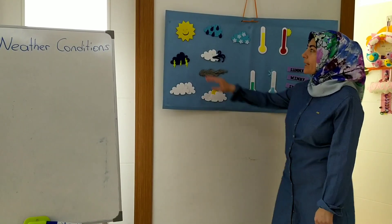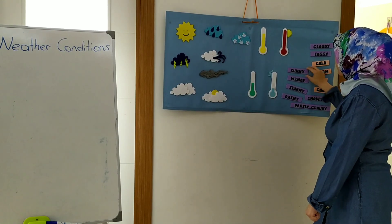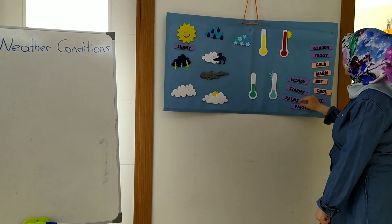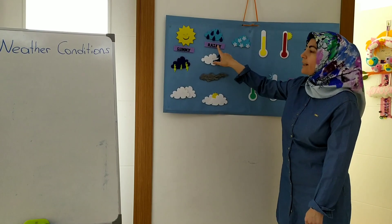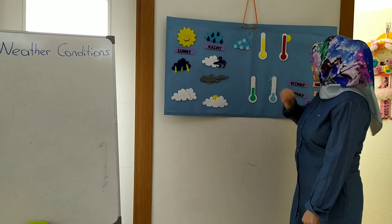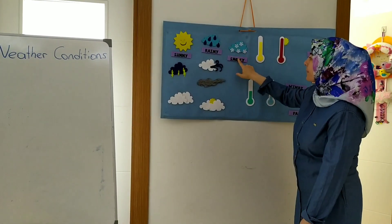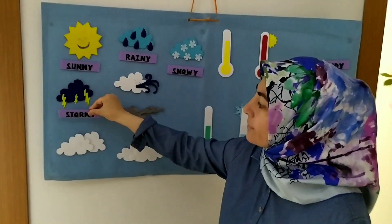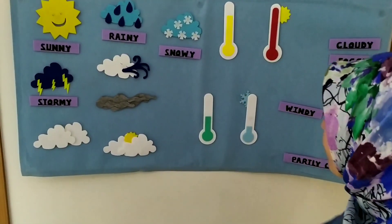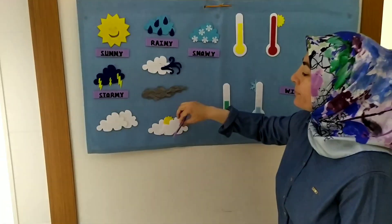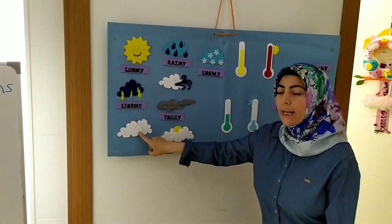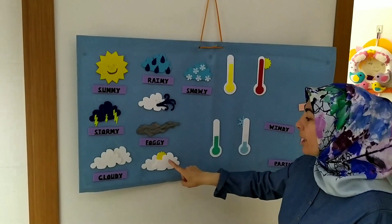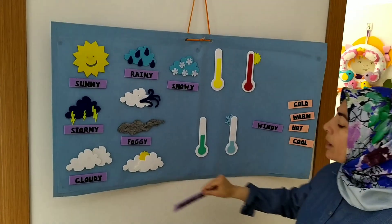Let's repeat. Sunny. Sunny. Rainy. Rainy. Snowy. Snowy. Stormy. Foggy. Foggy. Cloudy. Cloudy. Partly cloudy. Partly cloudy.